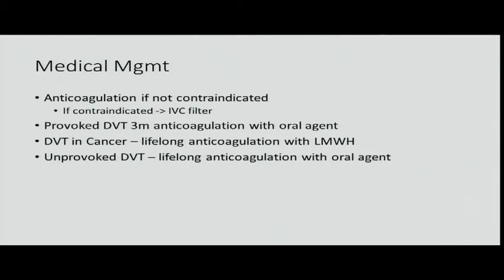Catheter-associated DVT: if a patient has a portacath or PICC line and they've got a clot around it, anticoagulate. Then ask — is the line necessary and still functioning? If it's a cancer patient still undergoing chemotherapy, leave the line in. Once done with the line, remove it and anticoagulate for three months after removal, because the line's presence is the provoking incident. Similarly, a DVT from a long train ride gets three months anticoagulation after they stop taking long trips. If immobilized due to a femoral rod, anticoagulate until they're ambulatory again.